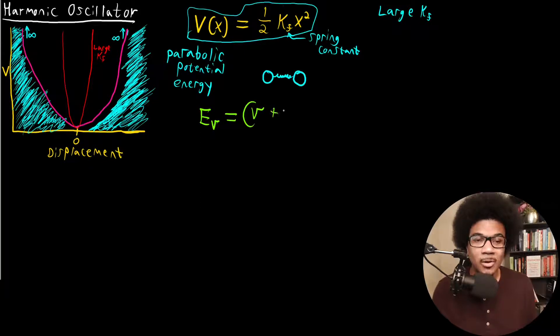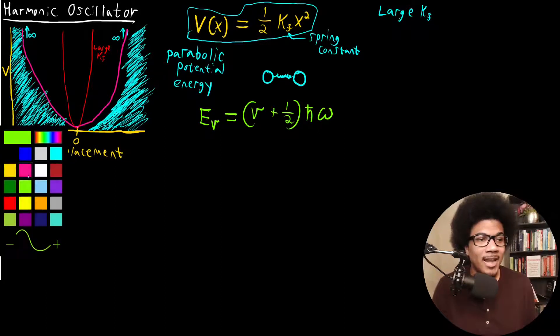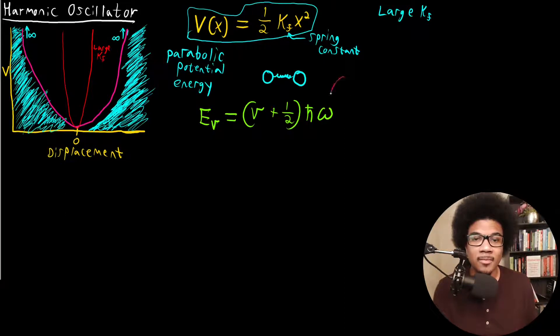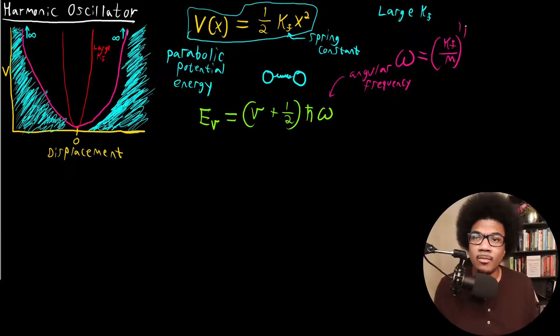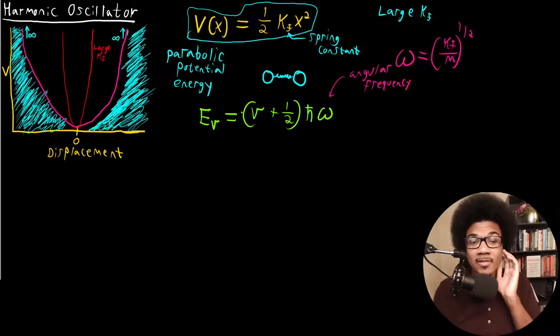The energy is going to be (ν + 1/2) times ℏω. Where again, ω here is that angular frequency. And again, it's related to the spring force: (K_f/M) raised to the one half power. So this is the energy expression for the harmonic oscillator.